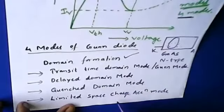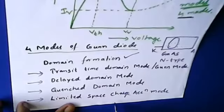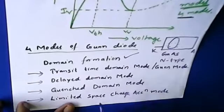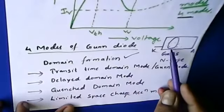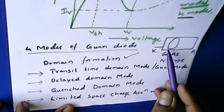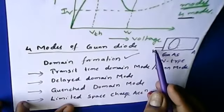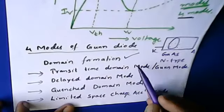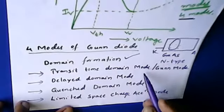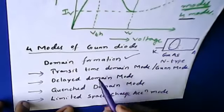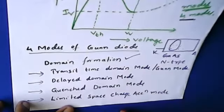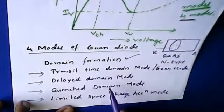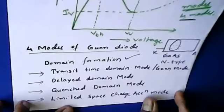I will be explaining the features of these four modes, and with that we will be finishing the Gunn diode topic. Based upon the formation of the domain and as it tends to move from one part of the device to another, the Gunn diode shifts its mode from one to another.